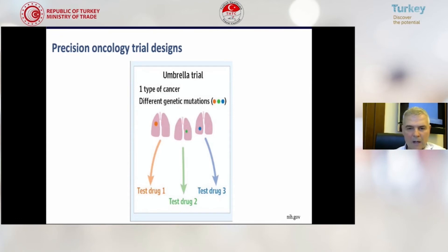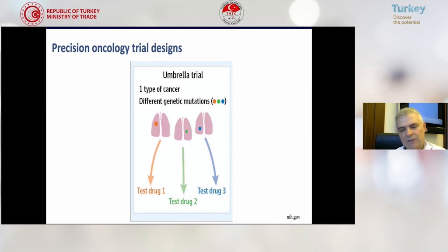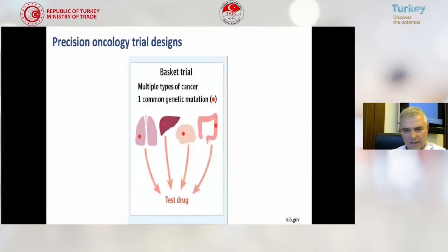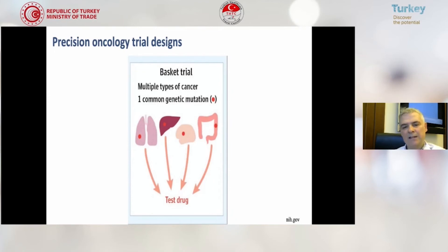An umbrella trial is an important trial in one type of cancer where we can detect different kinds of mutations and test several drugs at the same time in the same trial. Another type called a basket trial allows multiple types of cancer to be tested simultaneously if there is one common genetic mutation, and we can test one single drug.